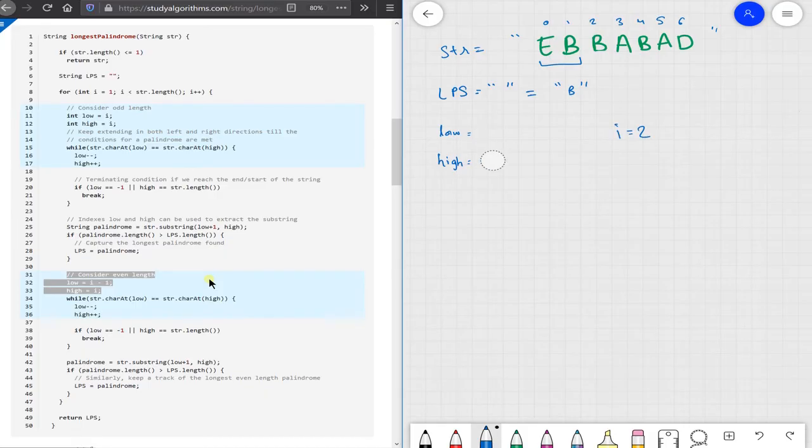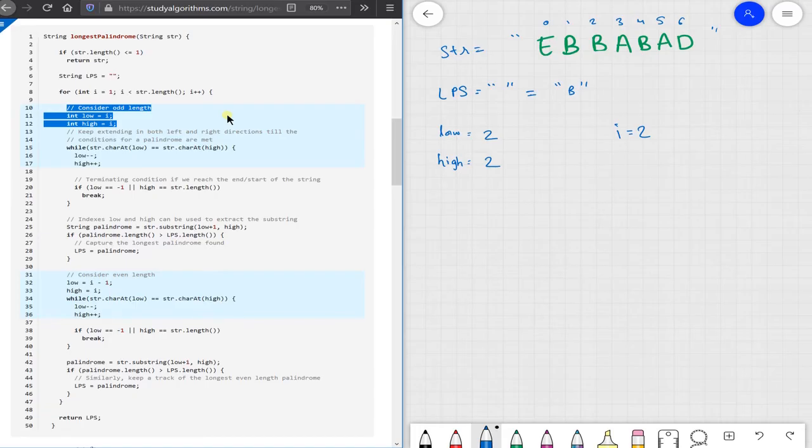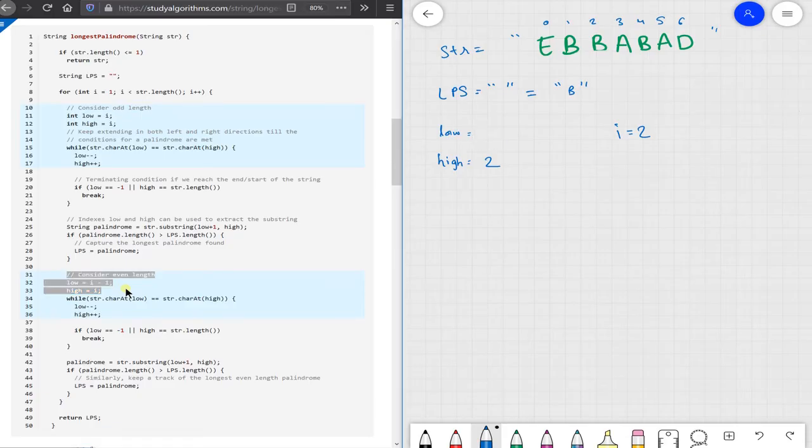So when i equals to 2, we again reset the values of low and high, and then low becomes equal to 2, and high again becomes equal to 2. The palindromic substring we again get is b. We don't find a valid palindrome in the left and right, and hence, there is nothing we can do about it. Now let us look at an even length palindrome.